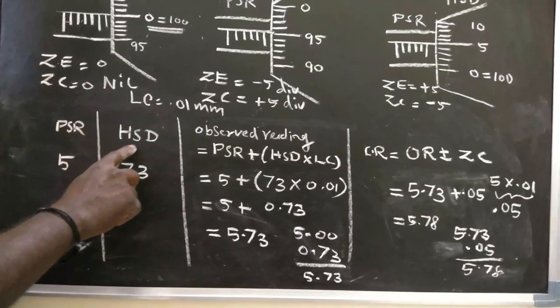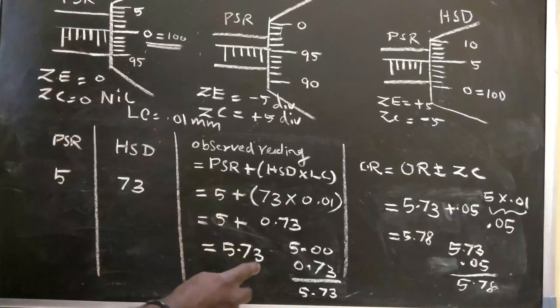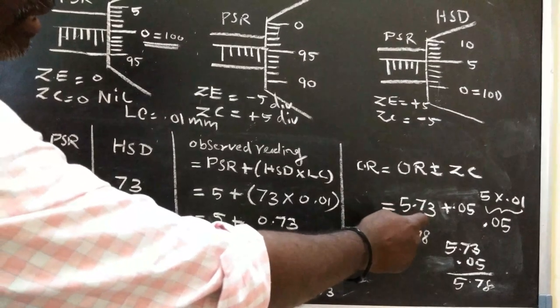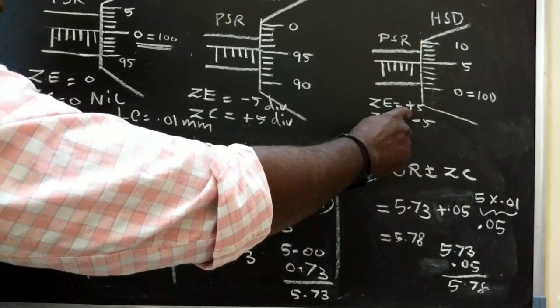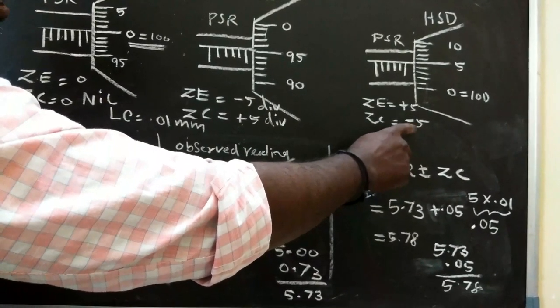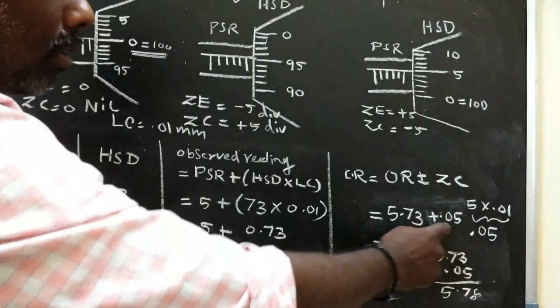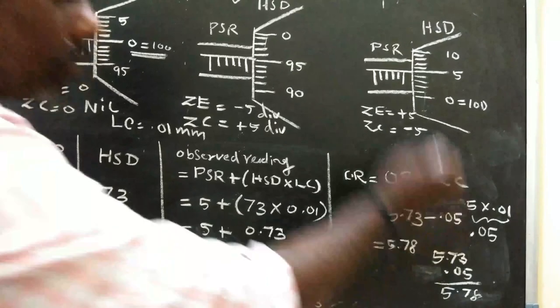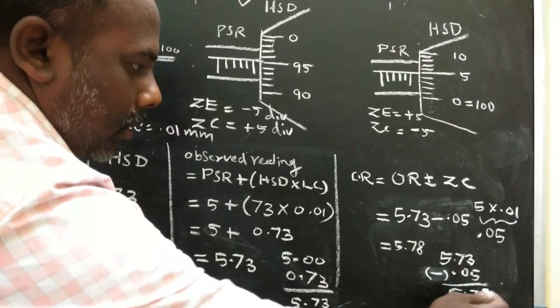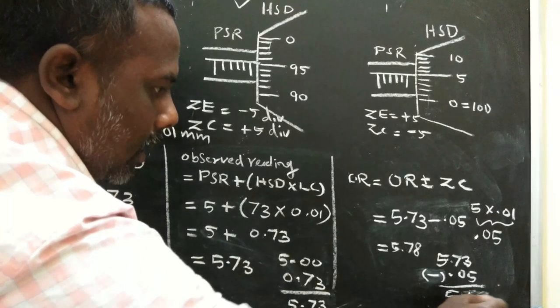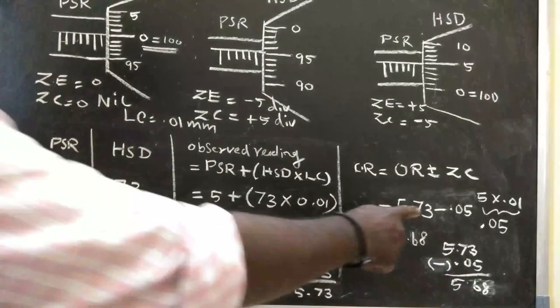Alternatively, if we have a negative error and negative correction of minus 5 divisions, the correction is minus 0.05. The correct reading would be 5.73 minus 0.05, which equals 5.68. This shows how positive and negative corrections affect the final reading.